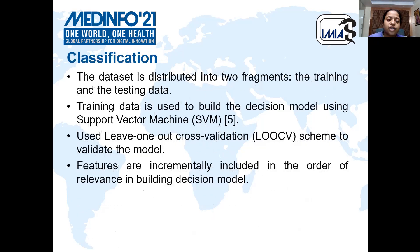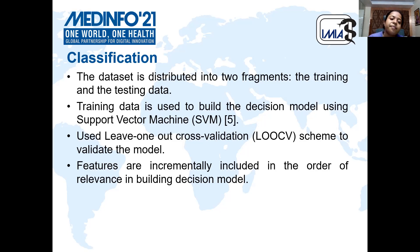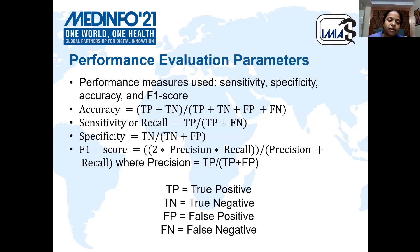For classification, we have used a Support Vector Machine. The dataset is divided into two parts: training and testing data. The training data is used to build the decision model, and the testing data is used for validation and testing. We have used a leave-one-out cross-validation scheme to validate the model. Features are incrementally included in order of relevance in building the decision model. The performance evaluation parameters used are accuracy, sensitivity, specificity, and F1 score.